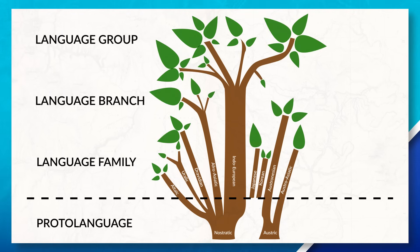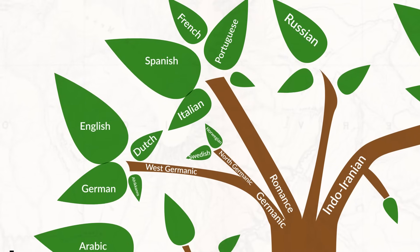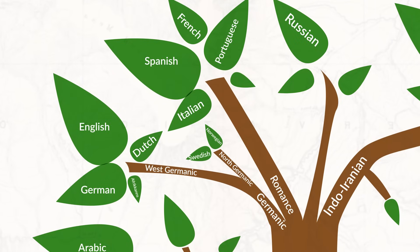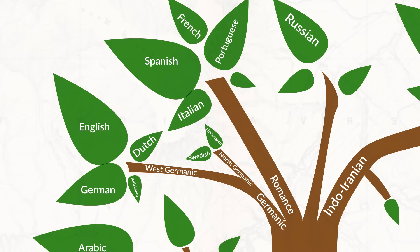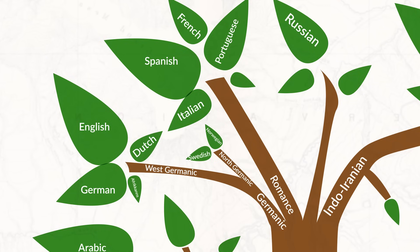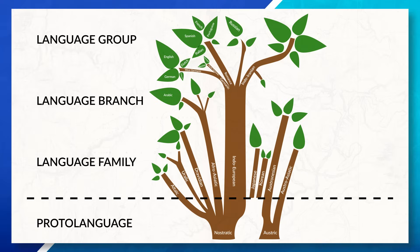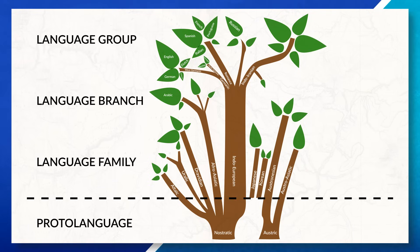Then there are the language branches or groups. A language branch is a cluster of different languages that are part of a language family and make up a subdivision of that language family. A language group, on the other hand, is made up of different languages that are part of a language branch. These languages often have similar vocabulary and grammar. For example, we can look at Indo-European as an example of a language family, where we can also see examples of language branches and language groups.